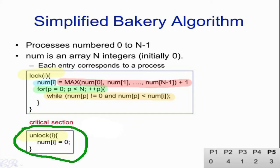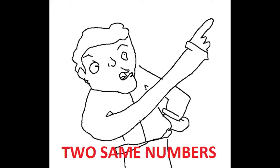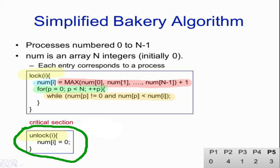Now what happens if two numbers have the exact same number? Let's say P2 and P3 both have number two. They'll go through the for loop, but once they get to the while loop, they'll execute down to unlock.